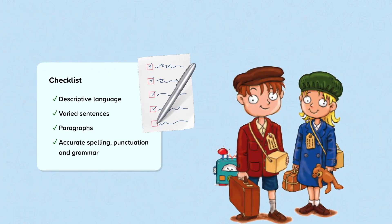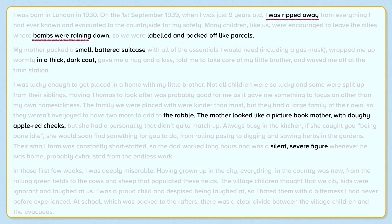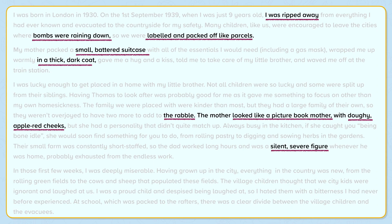Now we're going to go through the model answer, thinking about how it meets each of the items on the checklist. We're looking for descriptive language, varied sentence structures, paragraphs, and accurate spelling, punctuation and grammar. Remember, these are good things to include in all types of writing, not just in an autobiography. This example uses descriptive language throughout, as we can see from the underlined examples. It includes similes such as 'labelled and packed off like parcels', and adjectives such as 'small and battered' to describe the suitcase. It also includes alliteration in the phrase 'silent, severe figure'.